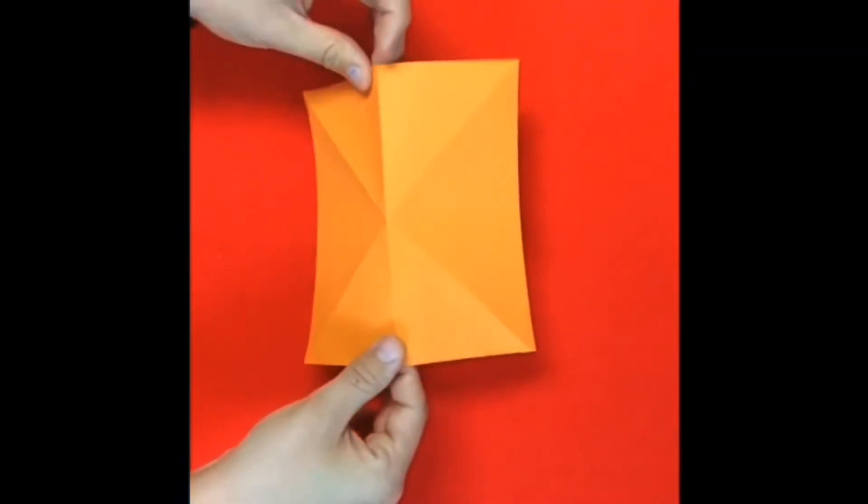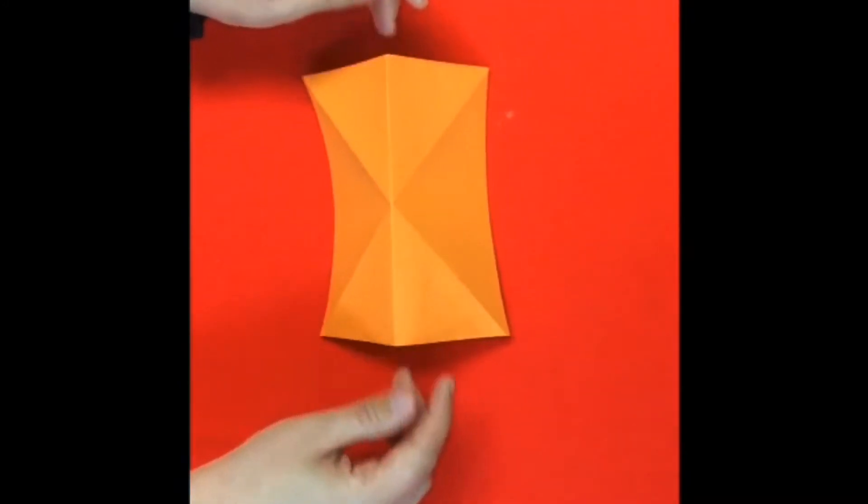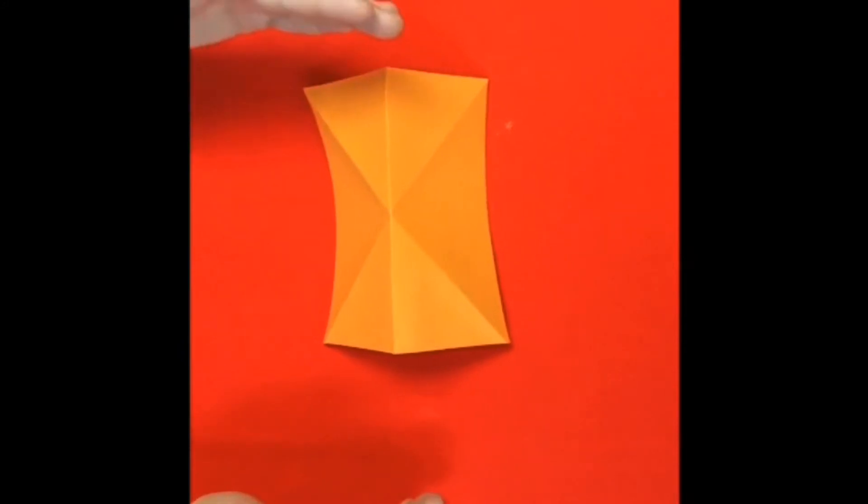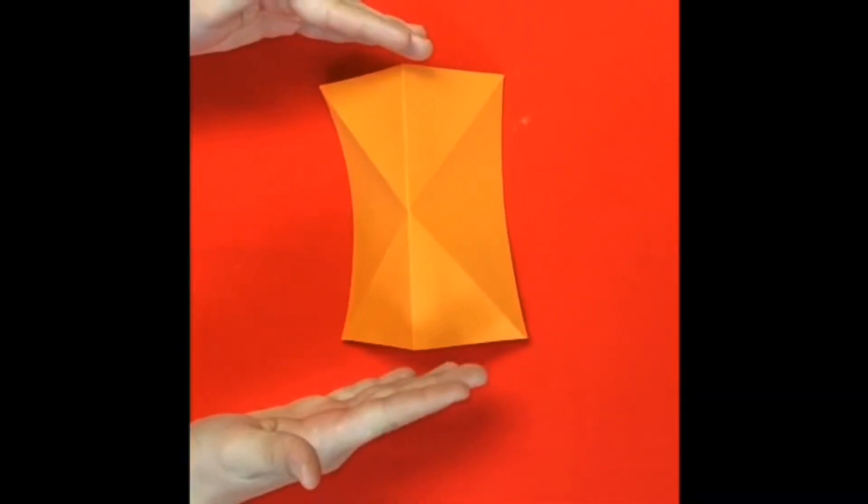Now you're going to put it into mountain view and you should have two bigger triangles on the side.